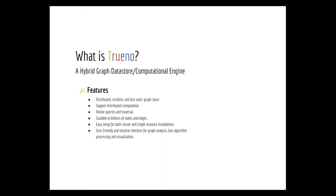This effort led to the development of what we call Trueno — our hybrid graph data store and computational engine. This is a database meant to run in the cloud. It is distributed, resilient, and a fast static graph store. Once data is integrated into the store, it becomes available for analytics. It supports versioning, dynamic networks, distributed computations, online queries, traversals, and analytics. It scales to very large network databases — we have tested up to billions of nodes and edges. Setup requires literally about three mouse clicks for both cluster and single instance installations, and it provides a powerful, friendly interface for network analysis with a built-in library of tools and visualization hooks.